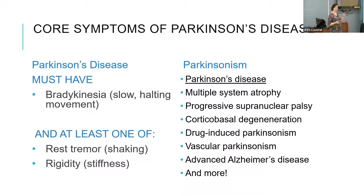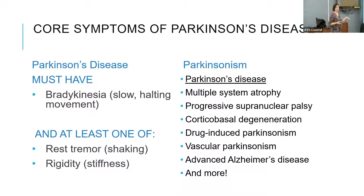If you don't have a rest tremor, you can still have Parkinson's disease by meeting the other two criteria of rigidity and bradykinesia — which is sometimes a misconception in general knowledge. There are also other types of Parkinsonism, which can look like Parkinson's disease but either doesn't meet all its features or has additional features giving it another diagnosis. These include drug-induced Parkinsonism, advanced Alzheimer's disease, multiple system atrophy, progressive supranuclear palsy, and corticobasal degeneration — rare but important to rule out.